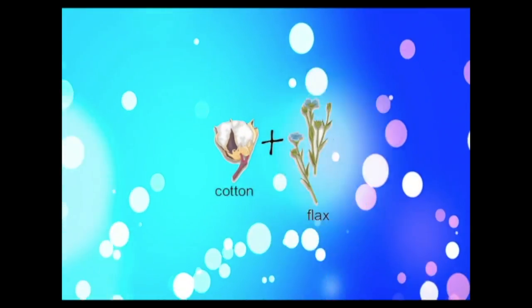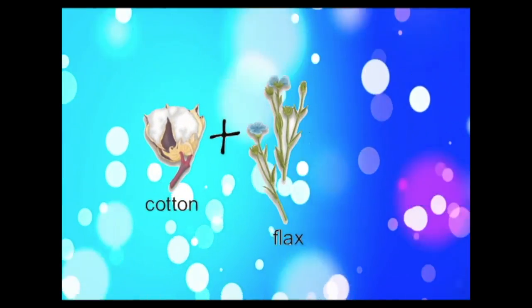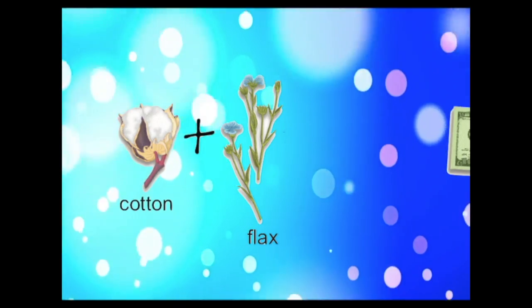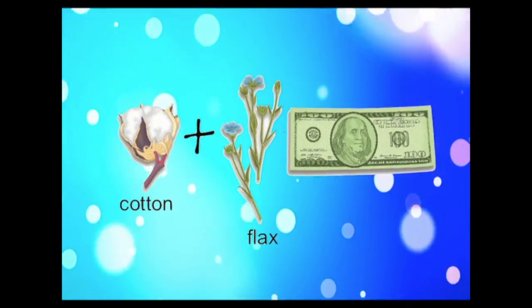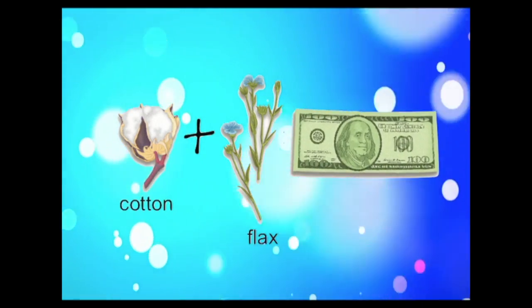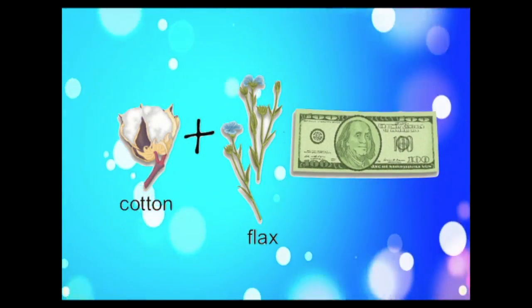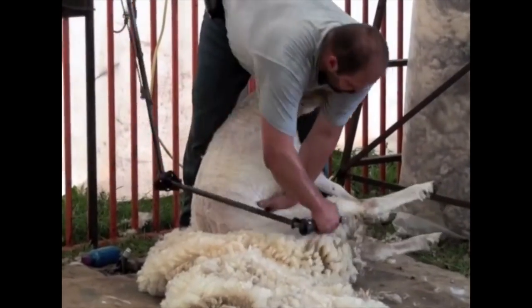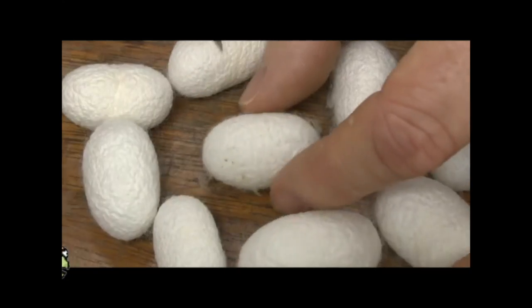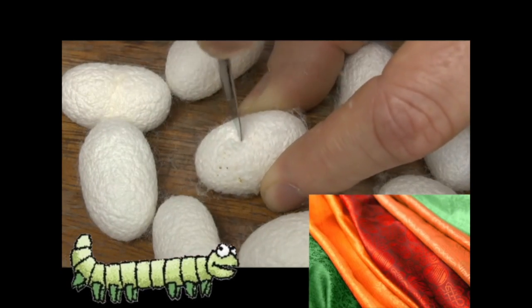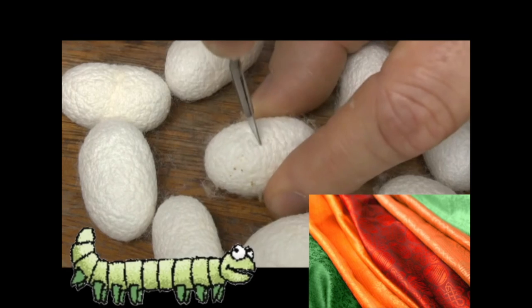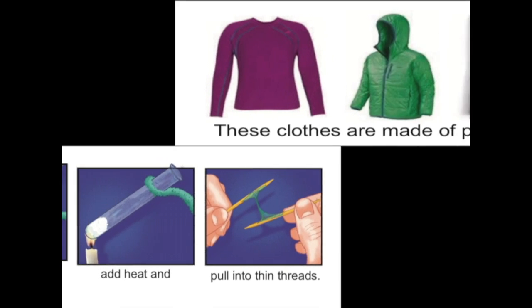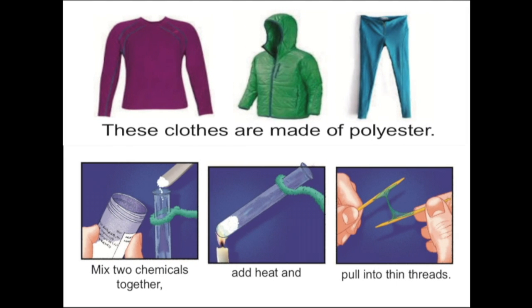Fibers come from plants and animals. Cotton and flax grow on plants. Money is made from cotton and flax fibers. Sheep make wool. Silk comes from caterpillar cocoons. People also mix chemicals to make fibers like polyester.